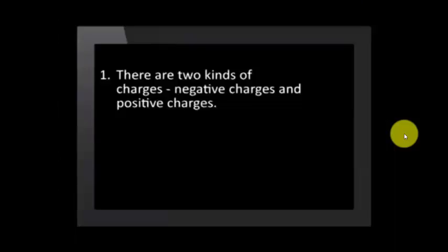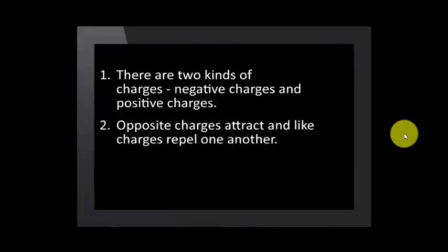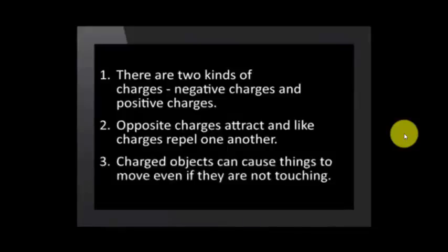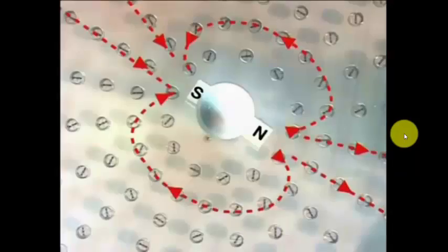Let's first very quickly recap what we have already learned about objects charged with static electricity. In our previous two lessons, we discovered that there are two kinds of charges: negative charges and positive charges. Opposite charges attract and like charges repel one another. Charged objects can cause things to move even without touching them — similar to what we learned about magnets and magnetic fields.